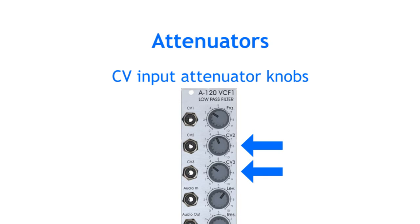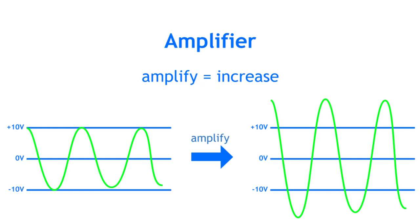The opposite of an attenuator is an amplifier, which doesn't reduce a signal but makes it stronger or louder than it originally is.